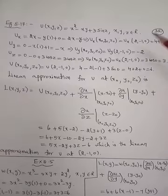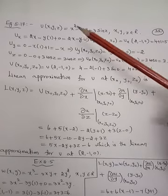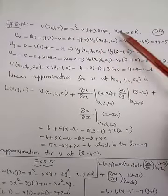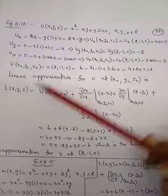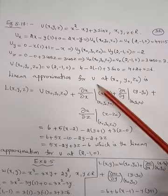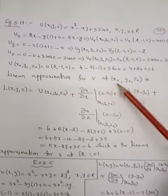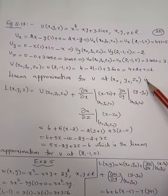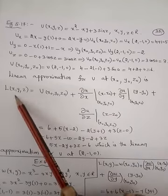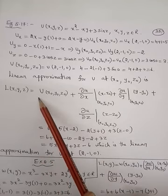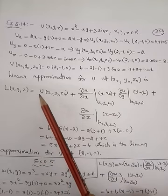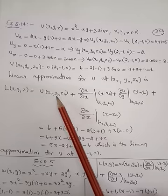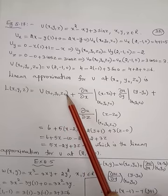The formula for linear approximation of u at (x₀, y₀, z₀) is: L(x,y,z) = u(x₀, y₀, z₀) plus partial derivative terms evaluated at that point.